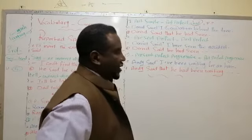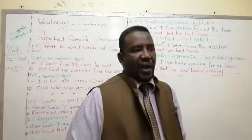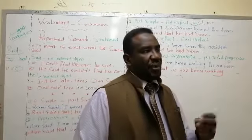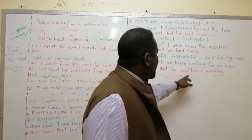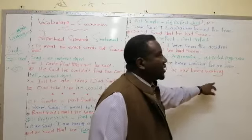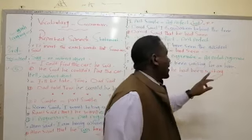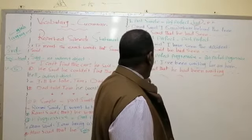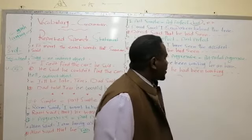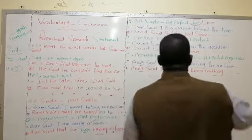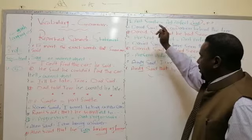In present perfect progressive, for example: 'I have been teaching you for 20 minutes.' If someone wants to report this, he says: 'The teacher had been teaching us for 20 minutes.' Another example — he looked at the service desk and said: 'I have been waiting for an hour.' We report: 'He said that he had been waiting for an hour.' We can join rules three and four: both past simple and present perfect in reported speech are changed to past perfect.